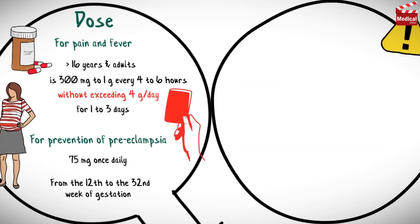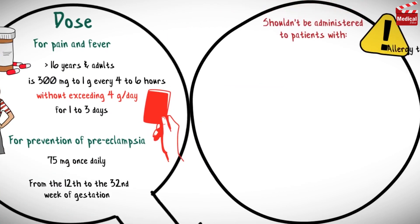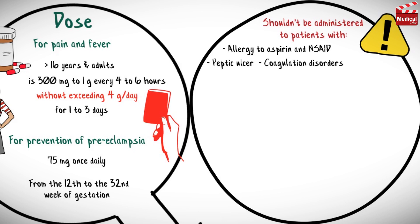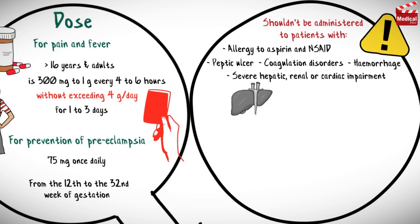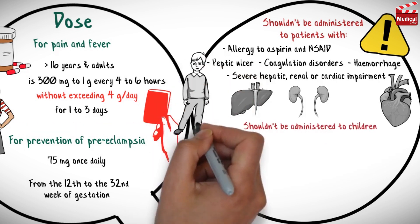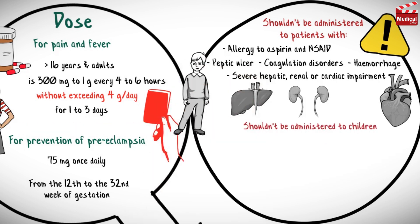Aspirin shouldn't be administered to patients with allergy to aspirin and non-steroidal anti-inflammatory drugs, peptic ulcer, coagulation disorders, hemorrhage, and severe hepatic, renal, or cardiac impairment. It also shouldn't be administered to children for pain or fever; paracetamol should be used instead.